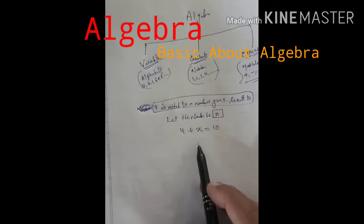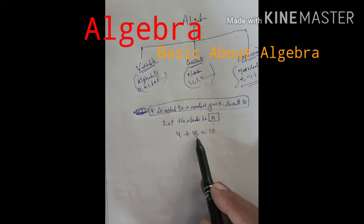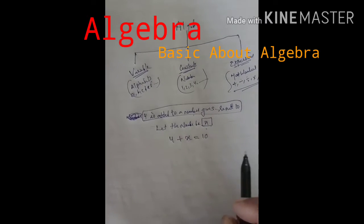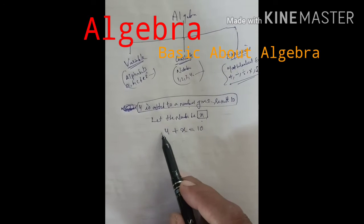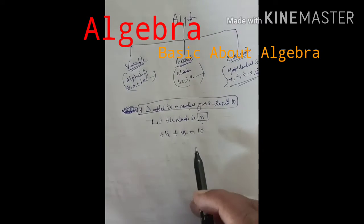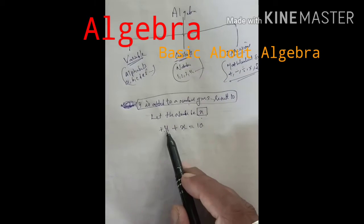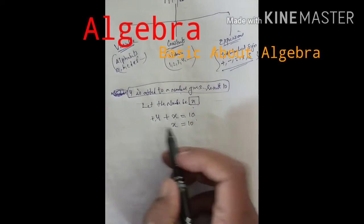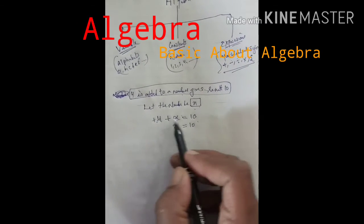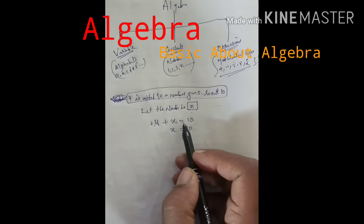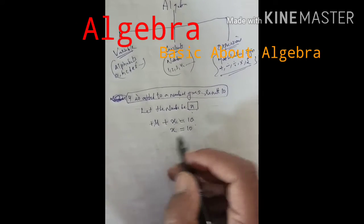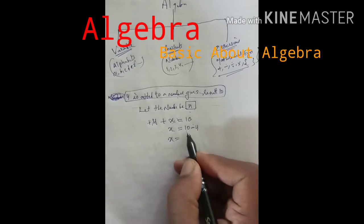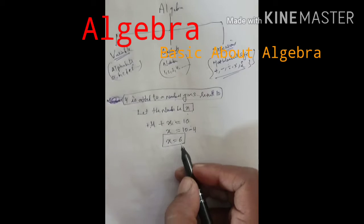अब यह solve कैसे होता है? Numbers one side जाते हैं। यह variable है — variable अपनी जगह रहेगा और numbers numbers के पास चले जाएंगे। जब numbers के पास जाते हैं तो उनमें changes होते हैं। इस 4 के पास plus का sign है। Plus 4 को 10 के पास ले जाना है — अगर equal to के दूसरी तरफ जाता है तो sign opposite हो जाएगा। तो x equals to 10 minus 4 = 6।